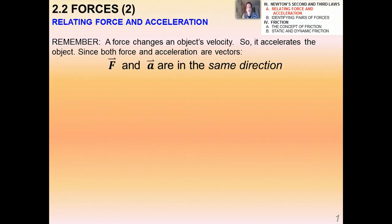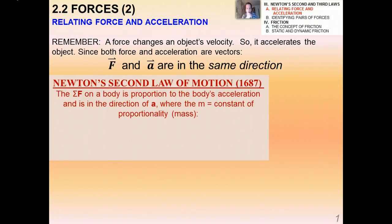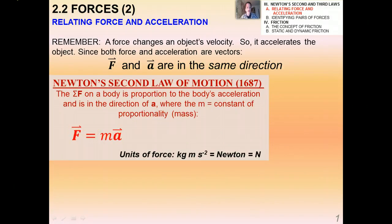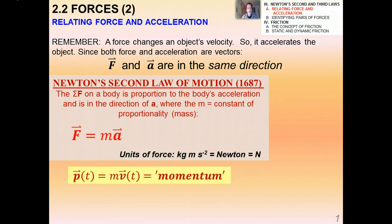A force changes an object's velocity — it accelerates the object. Since both force and acceleration are vectors, F and a are in the same direction. Newton's second law, published in 1687 in his famous Principia, states that the net force on a body is proportional to the body's acceleration and is in the direction of a, where M equals the constant of proportionality — the mass. In other words, F = ma. The units of force are newtons, which are kilogram·meters per second squared.